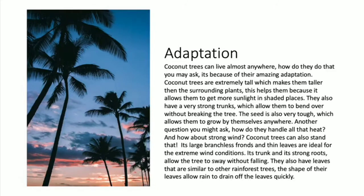Coconut trees can handle that too. Their larger, branchless fronds and thin leaves are ideal for extreme wind conditions. Their trunks and strong roots allow the tree to sway without falling. They also have leaves similar to other rainforest trees, and the shape of their leaves allows rain to drain off quickly.